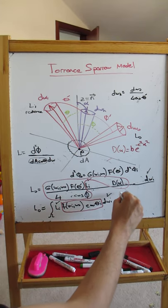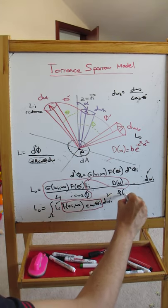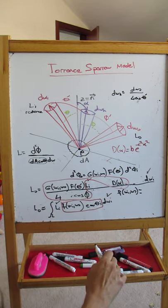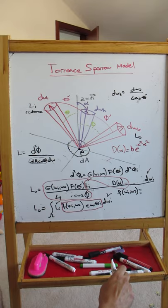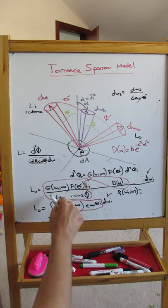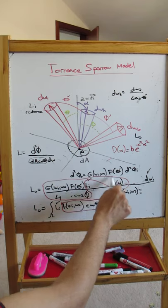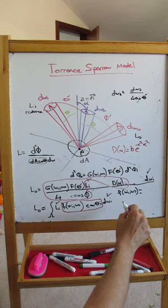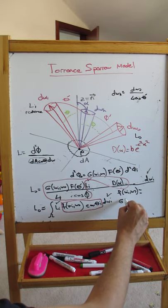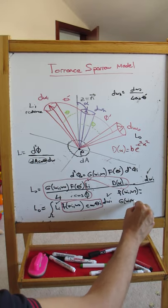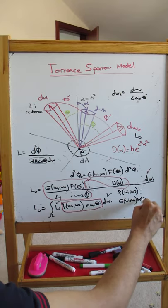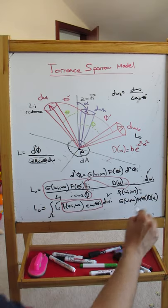So from here you must obtain this part. From here you can easily see what F should be. Then F Wi Wo is equal to this part divided by cos theta I. So it's going to be equal to G Wi Wo F theta prime D alpha.